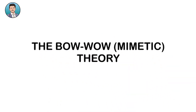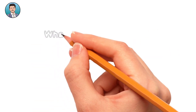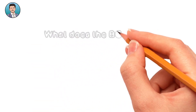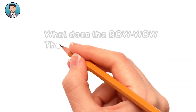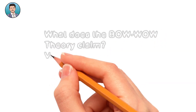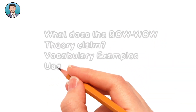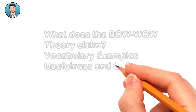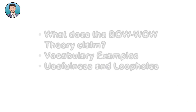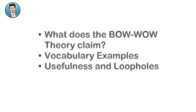Our topic is the Bow-wow theory. In this video, we are going to discuss this theory. First of all, obviously, the Bow-wow theory is number one. After that, we will see a certain state of vocabulary. According to the Bow-wow theory, it will relate to a form of vocabulary.